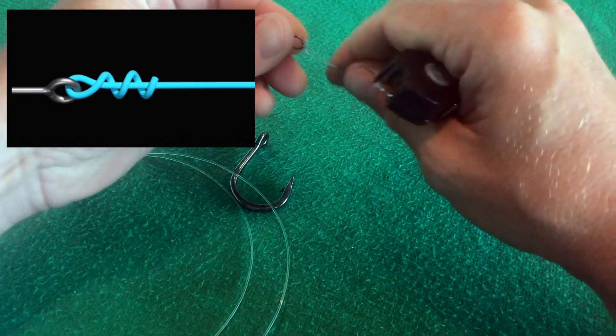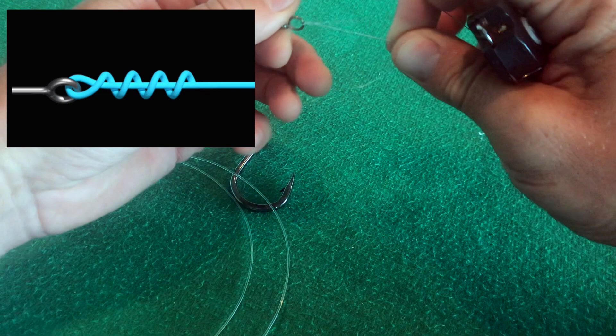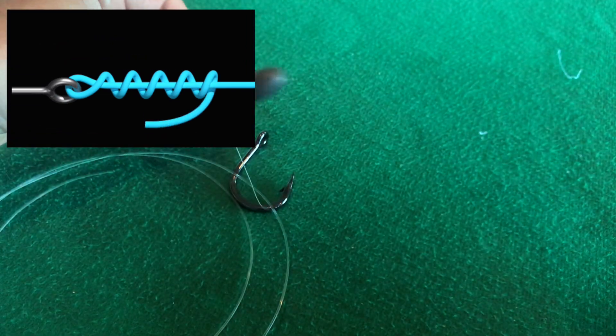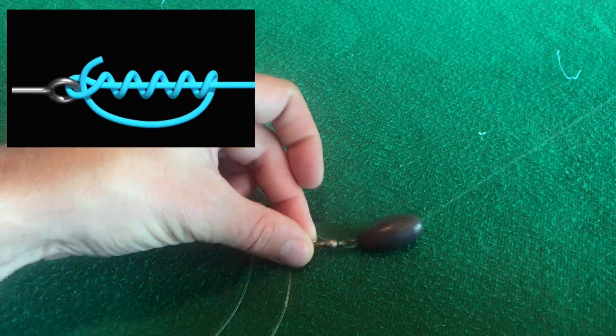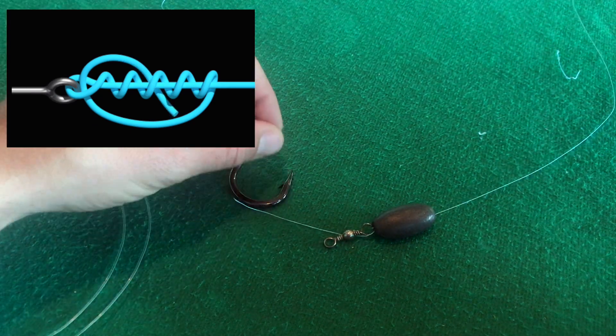Okay, so I'm going to make sure that cinch knot is all cinched up there. Looking good. And now that's going to stop that sinker from sliding into my main line.